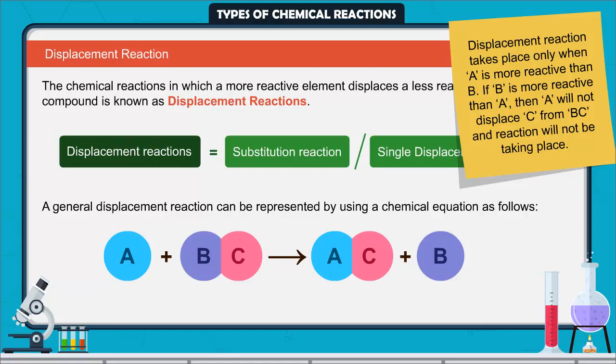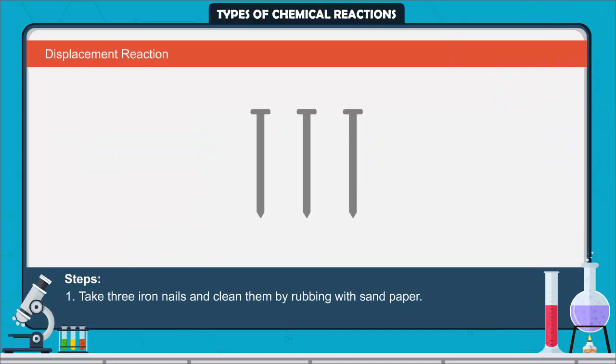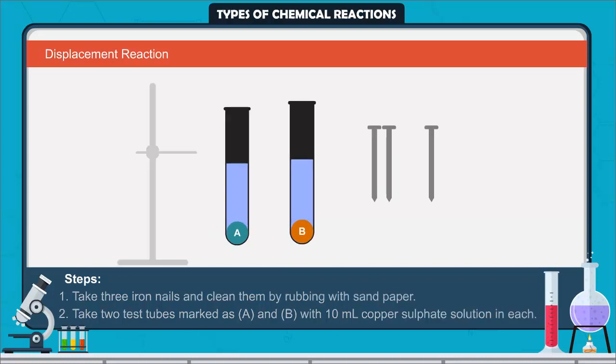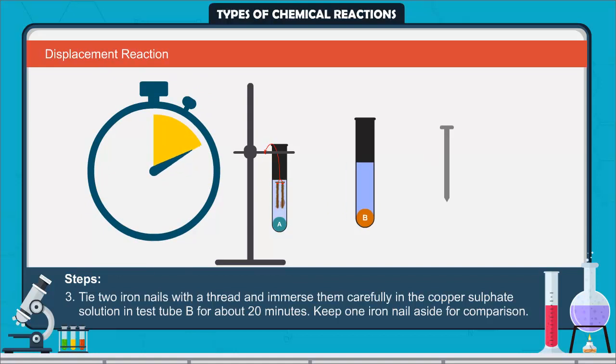Let's try an activity for better understanding. Take three iron nails and clean them by rubbing with sandpaper. Take two test tubes marked as A and B. In each test tube, take about 10 ml copper sulfate solution. Tie two iron nails with a thread and immerse them carefully in the copper sulfate solution in test tube A for about 20 minutes. Keep one iron nail aside for comparison.